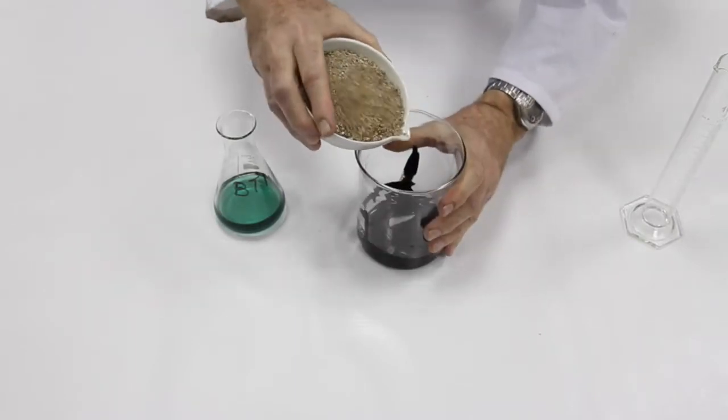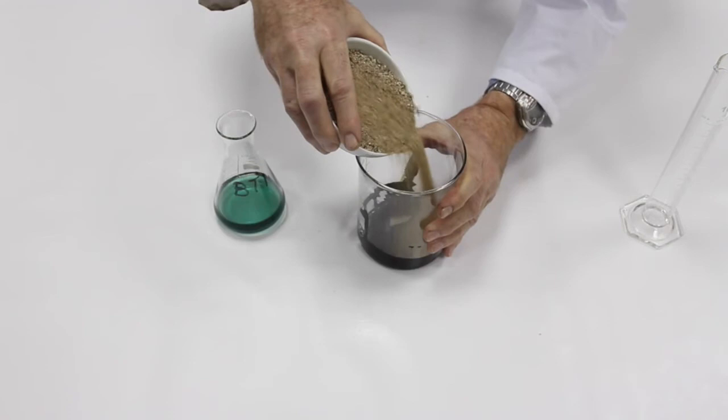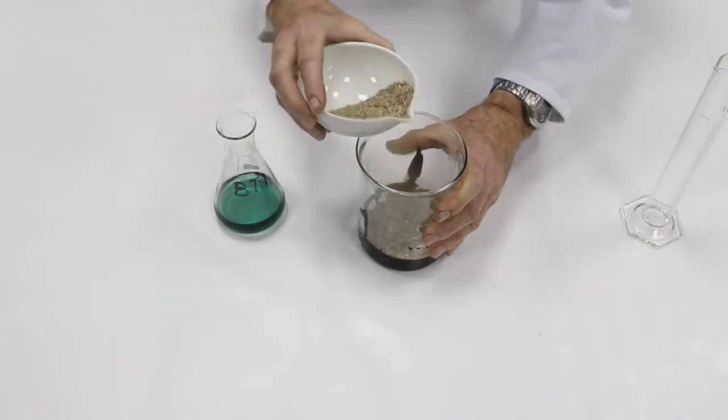The lab technician pours sand into the beaker. The sand and crude oil is mixed so that the entire mass is uniformly homogenized and impregnated, as well as the walls of the beaker.